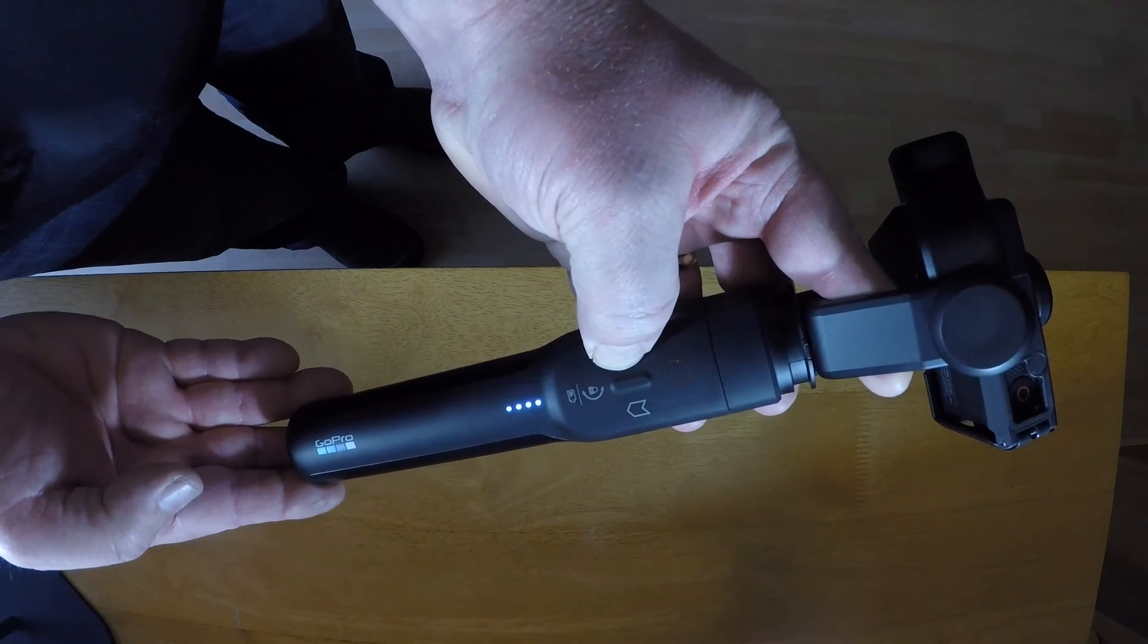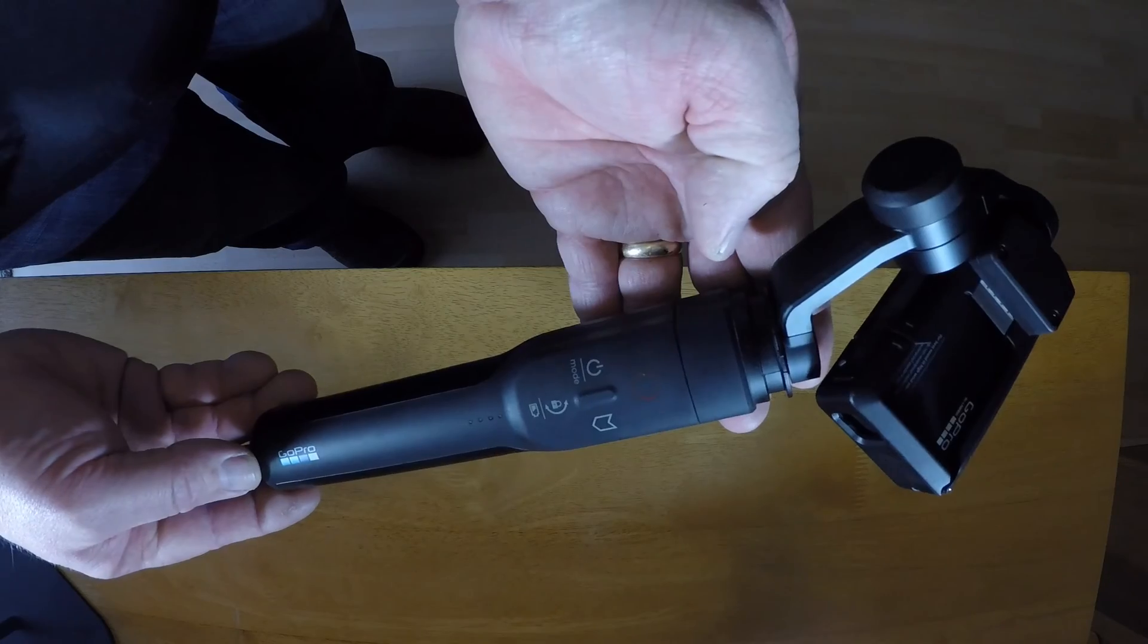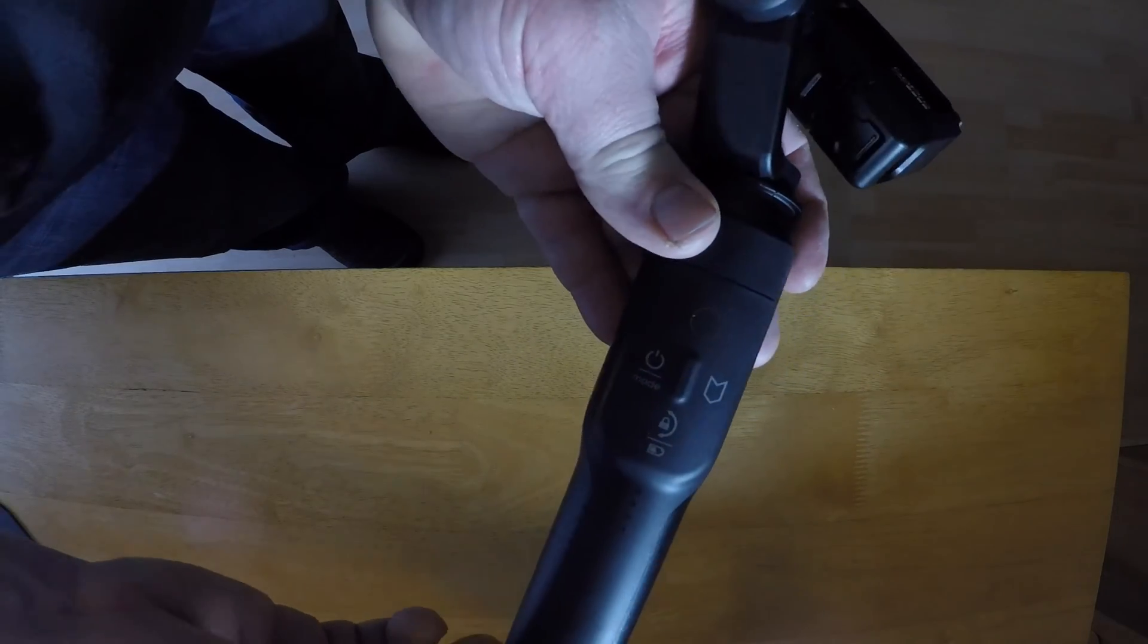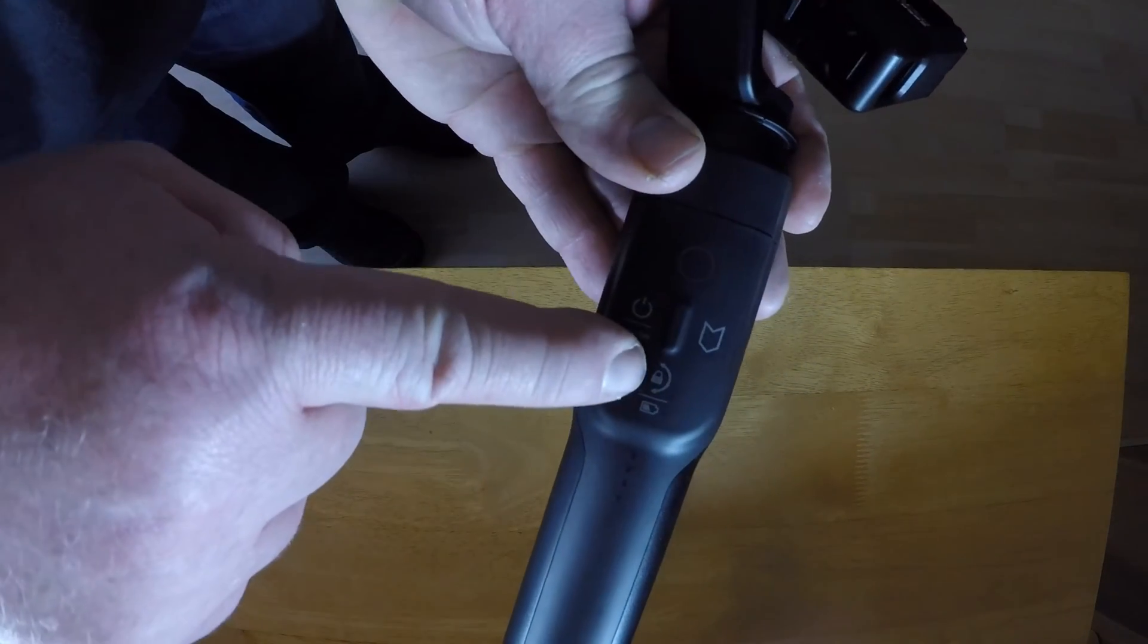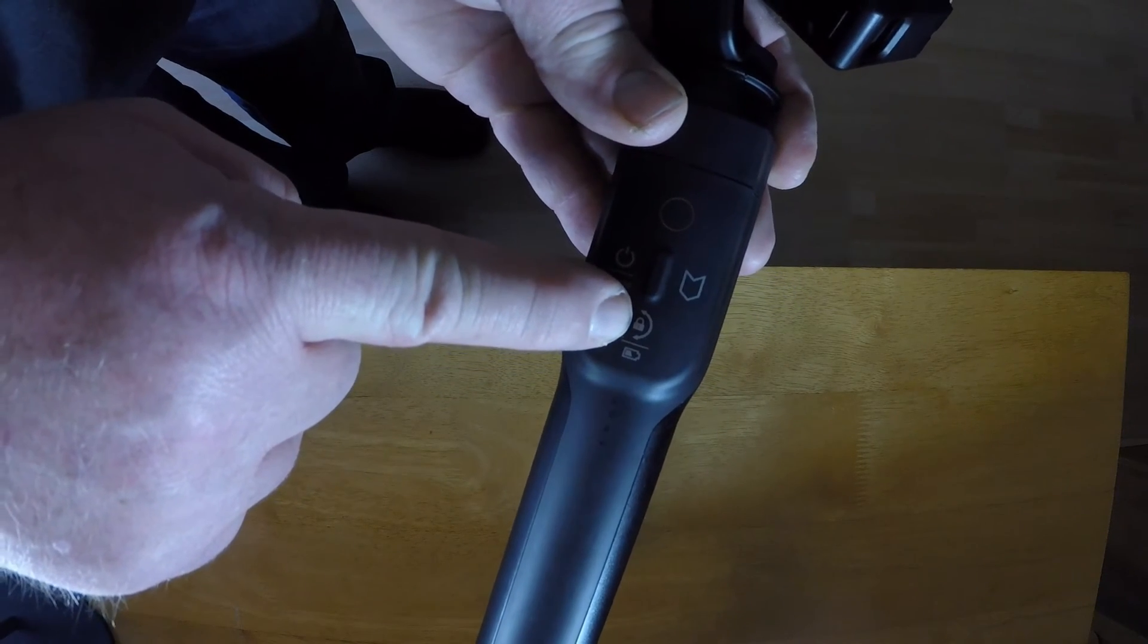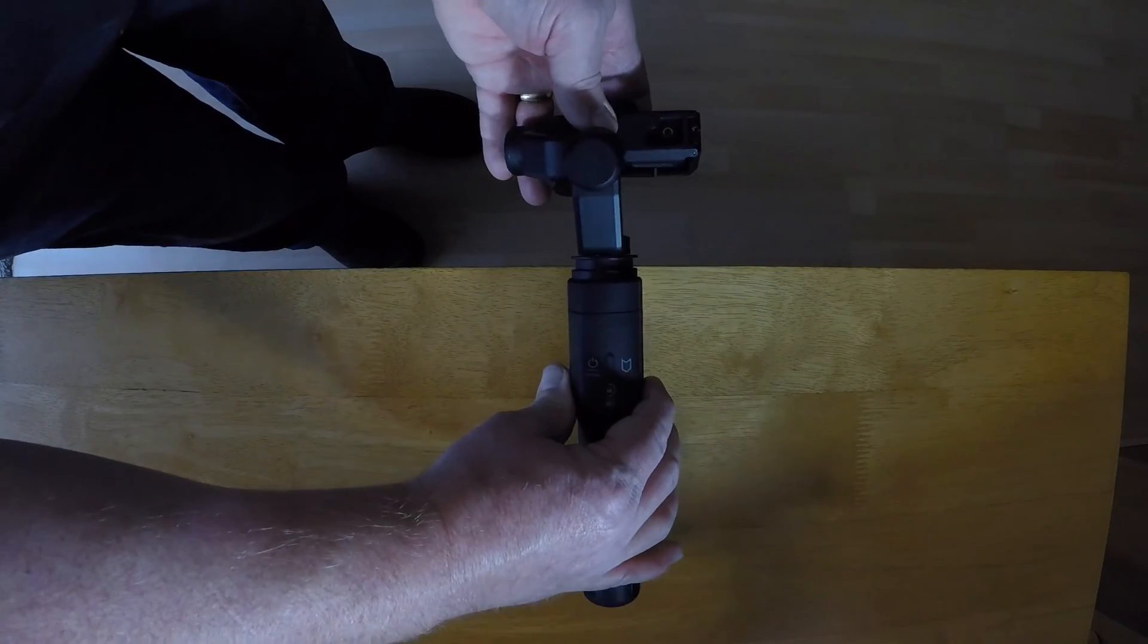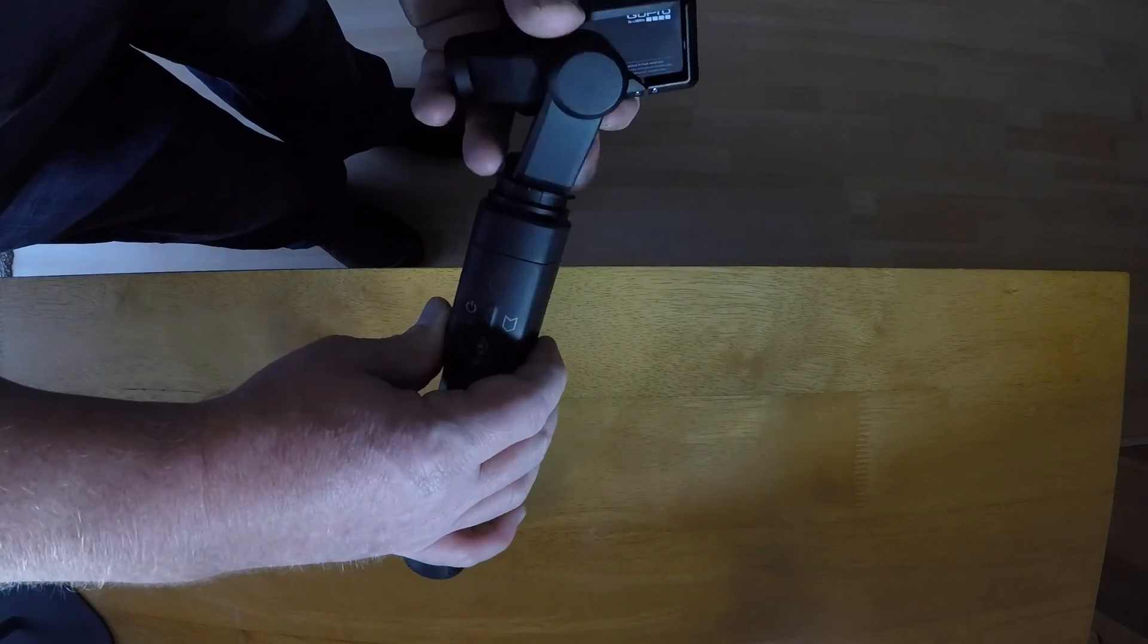You want to start with it in the off position. Once you've got your grip off, you're going to push and hold this tilt lock button for approximately 10 seconds, and you want to do that while the camera is on a surface. I've got a table.